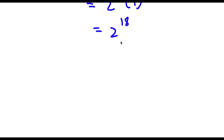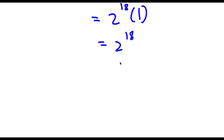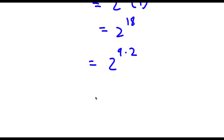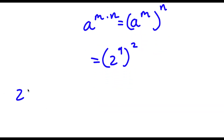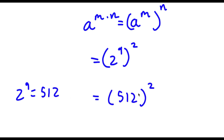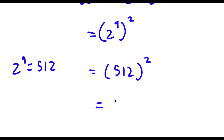So now let's go ahead and solve for the exact value of 2 to the power of 18. I'm going to rewrite this as 2 to the power of 9 times 2, since 18 equals 9 times 2. Using the rule that a to the power of m times n equals a to the power of m, to the power of n, I get 2 to the power of 9, to the power of 2. Now 2 to the power of 9 equals 512, so I have 512 to the power of 2.